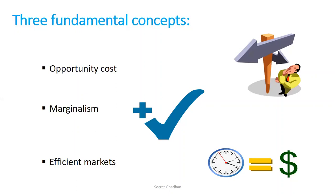Then we have the efficient market. An efficient market is a market in which profit opportunities are eliminated instantaneously — meaning someone will immediately grab the opportunity and start to produce. We can also say an efficient market is one where minimum resources are producing the maximum output.